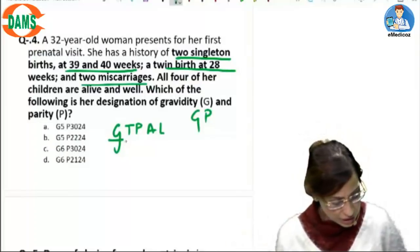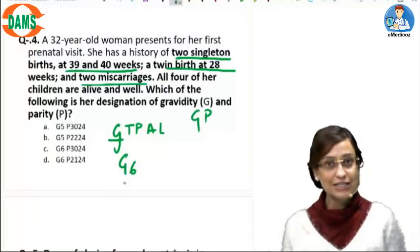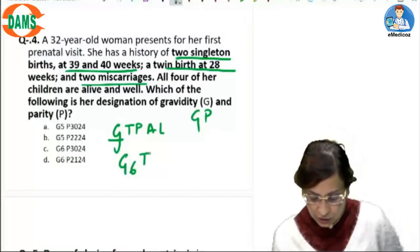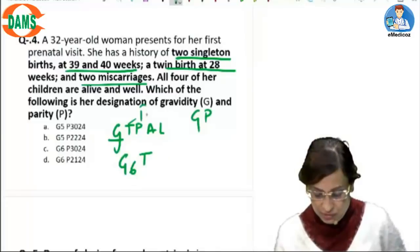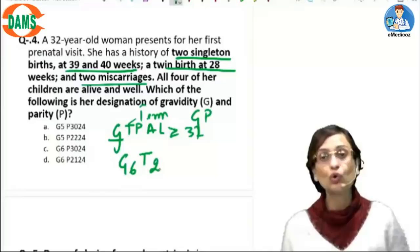So G here is going to be six. She's pregnant for the sixth time. Term. T here stands for term delivery. So deliveries at and beyond 37 weeks. So this is going to be two.